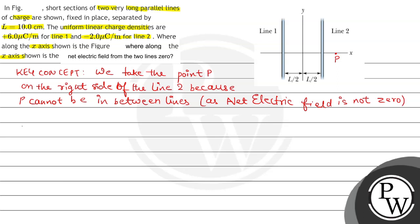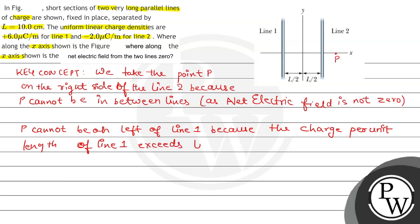Similarly, P cannot be on the left of line 1 because the charge per unit length of line 1 exceeds line 2. This means that if we assume a point P where electric field is zero, the point P cannot be in between line 1 and line 2.